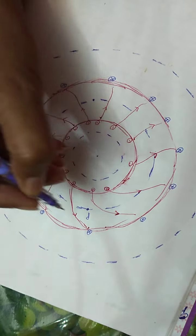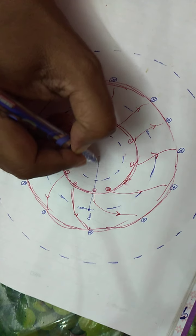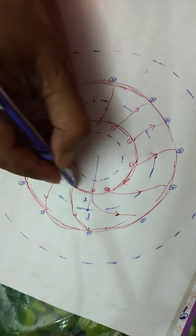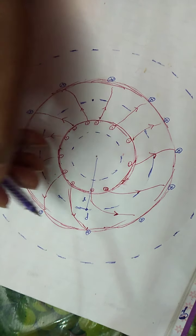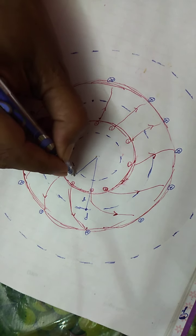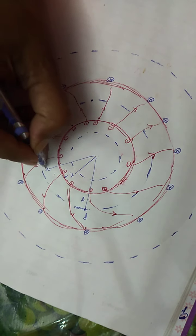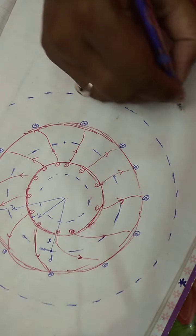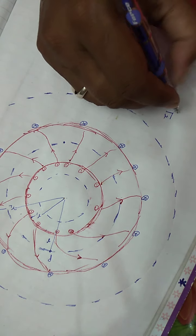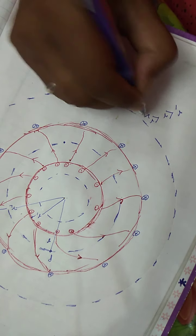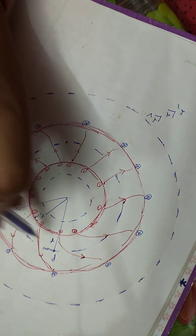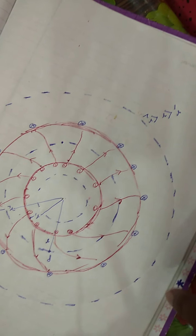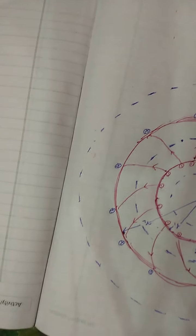We need to find the magnetic field at the center of the toroid, that means at any point which is at the center, at a distance r. A toroid has two radii — one is the inner radius r1 and the other is the outer radius r2. So r is greater than r1 but less than r2, and we need to find the magnetic field at a point P inside the toroid.